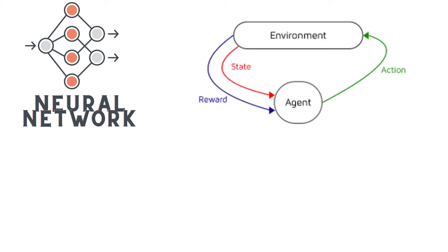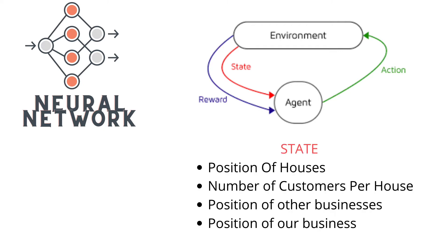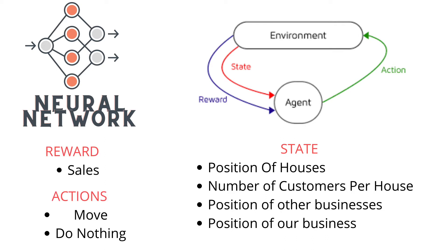To do that, we will use reinforcement learning. The way it works is that you have an environment — in this case the city — and for each action the agent, which is the business, makes, it gets a reward. The states will be the position of the houses, the number of customers in each house, the position of other businesses, and the position of our business. The reward will be the number of sales the business makes, and the actions can be to move right, left, up, down, diagonally, or do nothing.